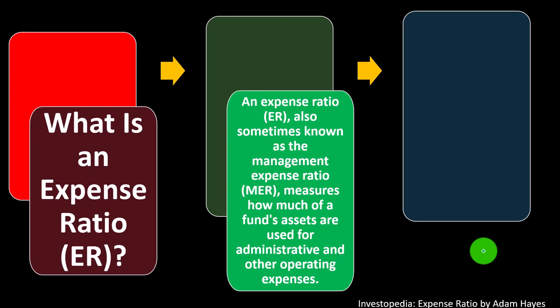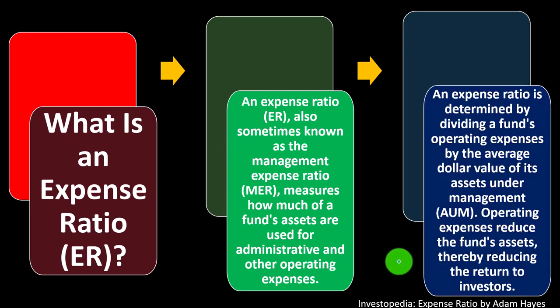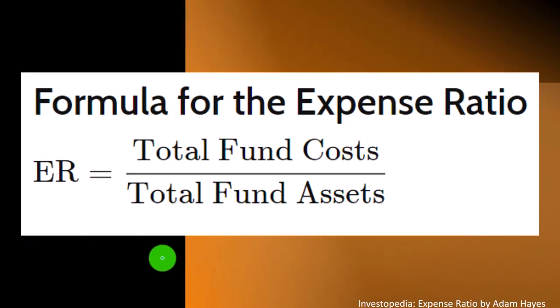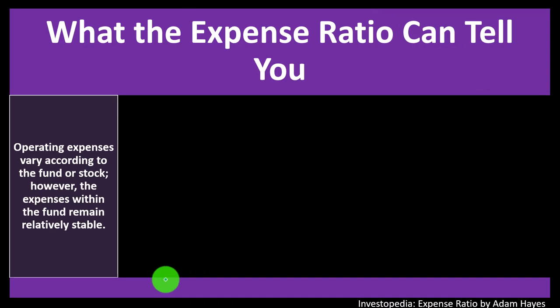When looking at managed funds like mutual funds, we'd like something similar — we have to pay someone to manage the fund, but we want most of the money going to us as returns on the investment. An expense ratio is determined by dividing a fund's operating expenses by the average dollar value of its assets under management (AUM). Operating expenses reduce the fund's assets, thereby reducing the return to investors. The formula is: total fund costs divided by total fund assets.